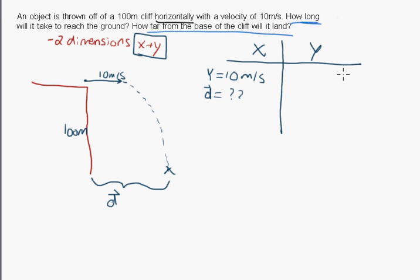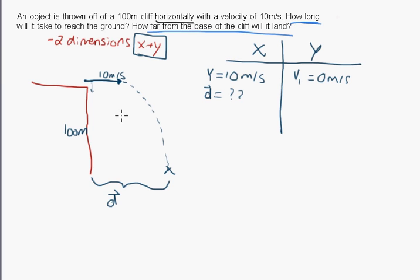In the y, the initial velocity is 0 meters per second, because there's no y component to the 10 m/s — it is exactly horizontal, so there's no vertical component. This is the same as if you simply dropped the rock straight off the edge of the cliff.